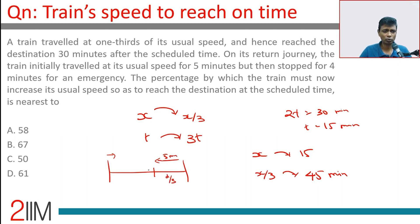But then it stopped for 4 minutes for an emergency. So 9 minutes are down so far. The percentage by which the train must now increase its usual speed to reach the destination on scheduled time is nearest to what?